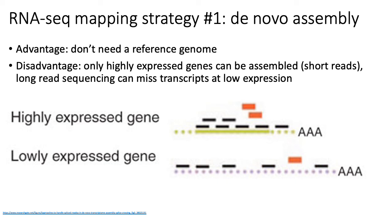There are a few ways to approach this mapping task. The first approach is basically to avoid mapping altogether and just do what's called de novo assembly. This is analogous to the whole genome assembly approach discussed previously, where you take your short reads from your RNA-seq experiment and try to rebuild the original transcripts that the reads came from.